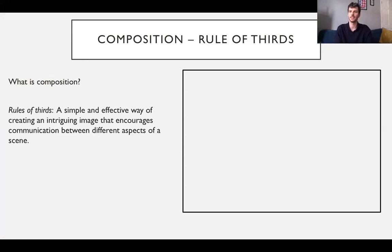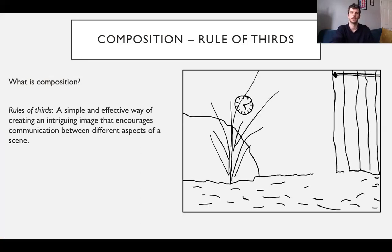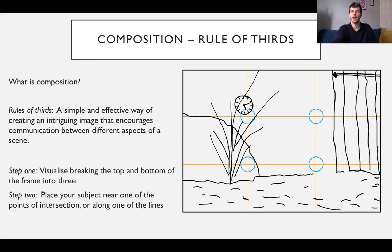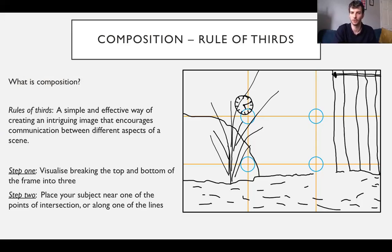The rule of thirds is a very simple, tried and tested way of creating interesting communication amongst the features of your image. Say you wanted to take a picture inside your living room - you break up the image along the vertical into three and along the horizontal into three, as you can see with these orange lines. At the intersections between the lines, that's where you place the subject - the most important aspect of your image that you want to draw the viewer's eye to. In this case, it might be your beloved cat, placed near one of those blue circles.